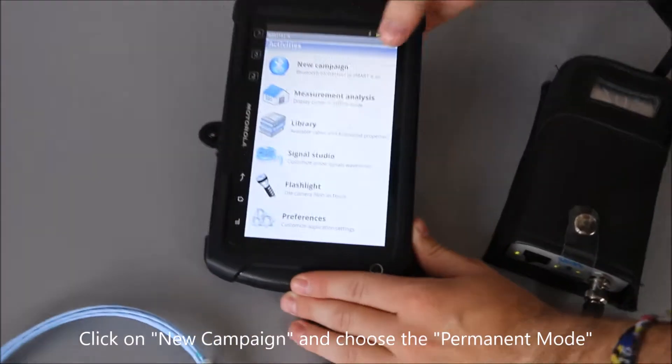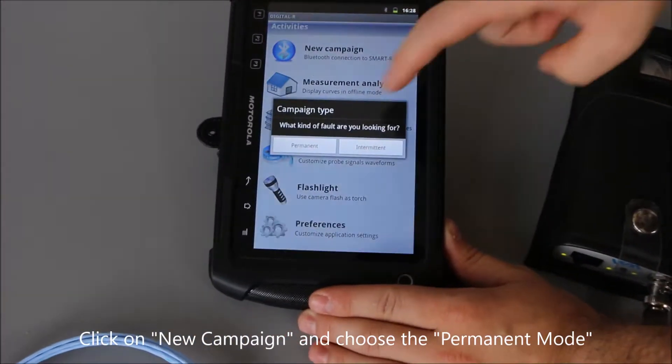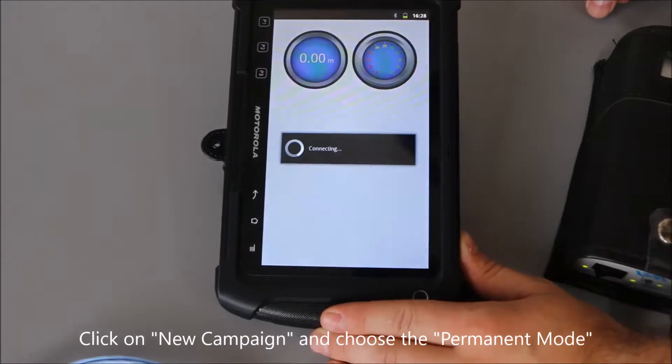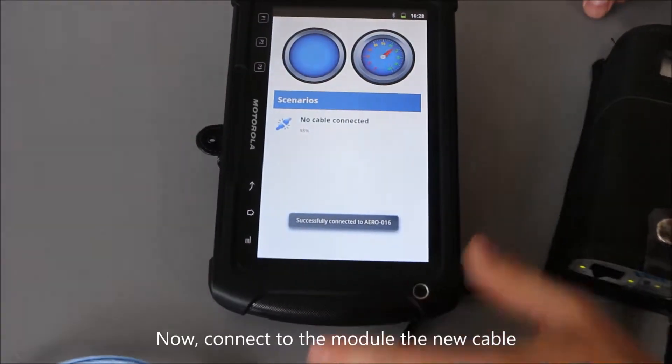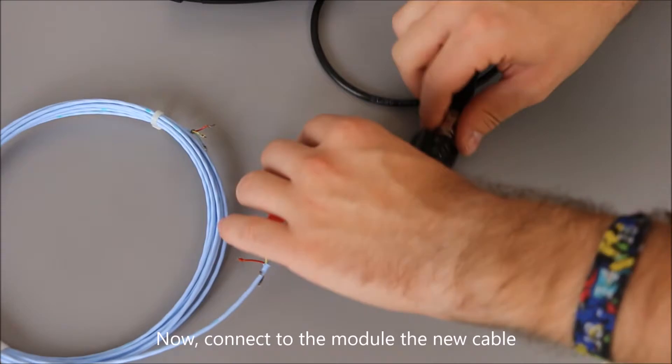You just have to go in a new campaign and launch a permanent campaign. Now you can connect to the module your cable.